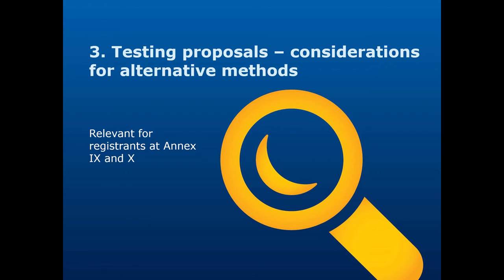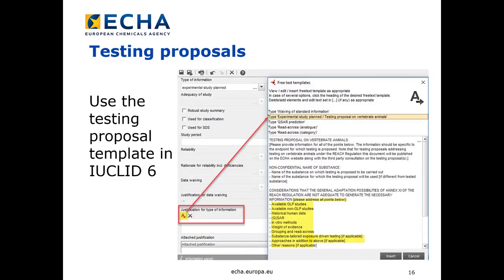The third part of our video is about testing proposals and considerations for alternative methods. This is relevant for registrants at annex 9 and 10. For testing proposals, it is important that you demonstrate that you have considered alternative methods for animal testing. This is easily done by using the provided template in the endpoint study record you create in IUCLID 6. By clicking the A icon, a pop-up window will open, and for testing proposal, you should select type 'experimental study planned / testing proposal on vertebrate animals' and insert the template into the free text field. After this, be sure to fill in the template with your relevant information, since inserting the template alone is not considered complete by ECHA. The considerations for alternative methods are highlighted yellow in the screenshot.